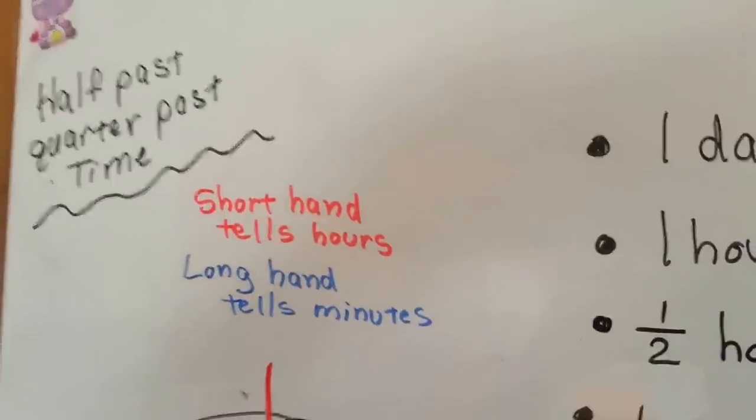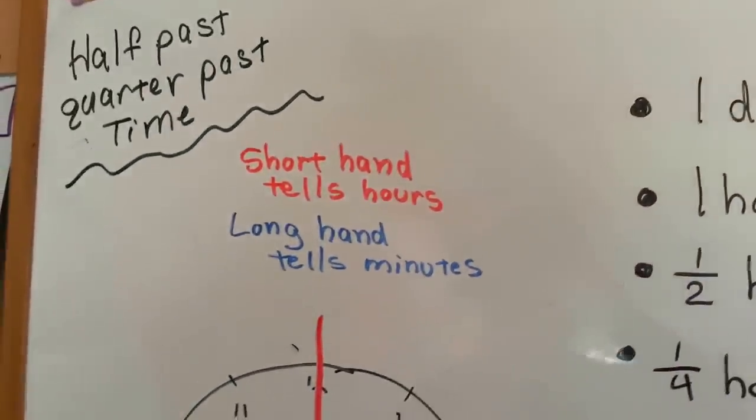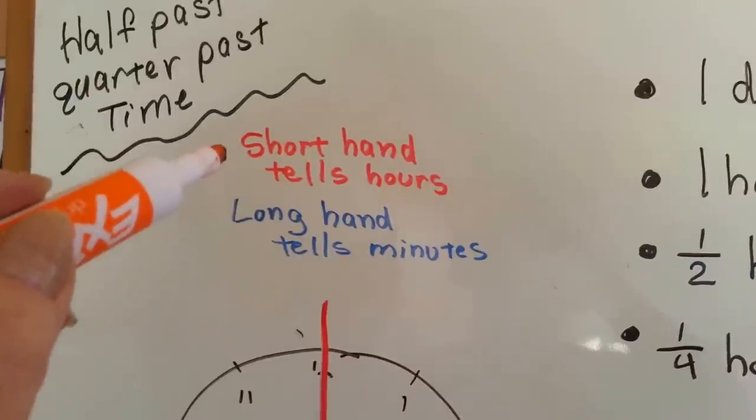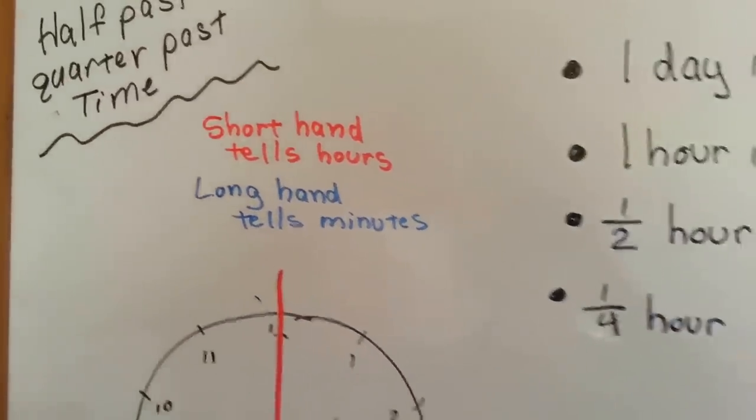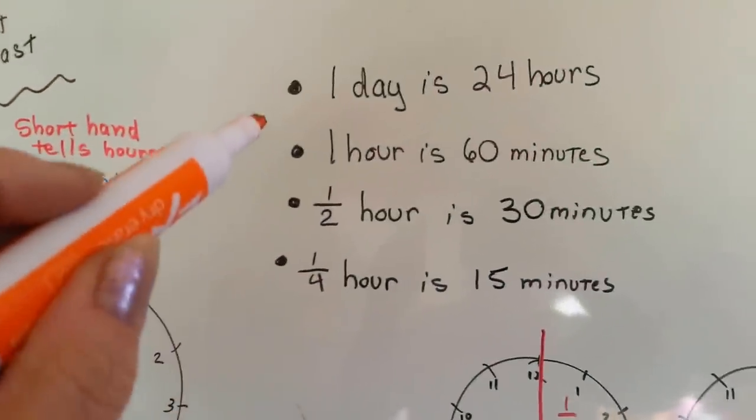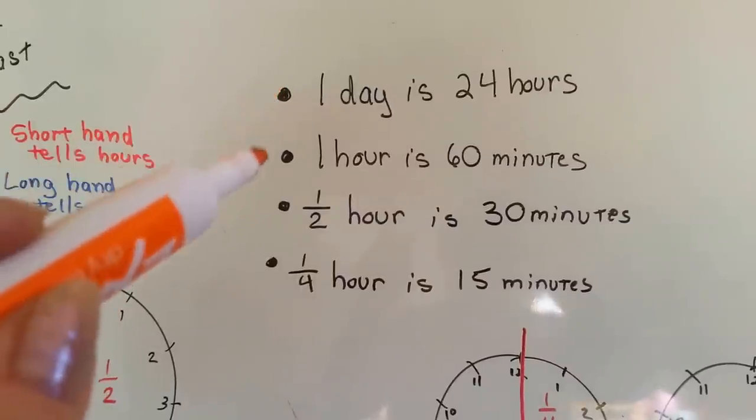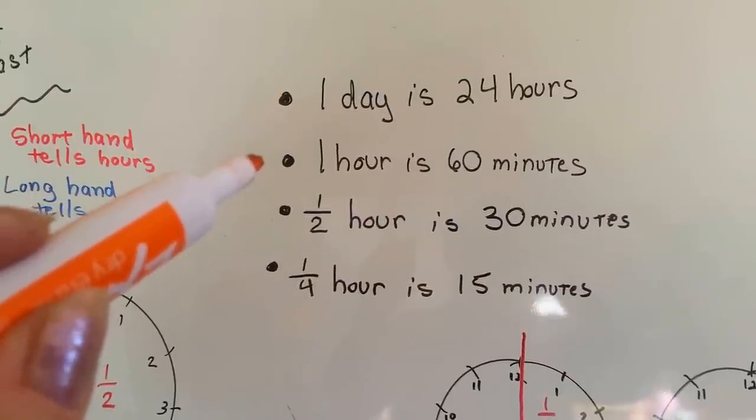Okay, we've been talking about time a lot in the last couple videos. Remember that the shorthand tells the hours and the longhand tells the minutes. One day is 24 hours. One hour is 60 minutes.